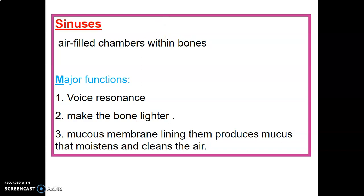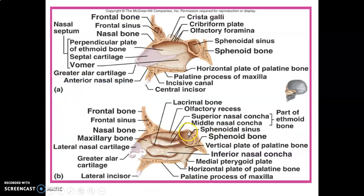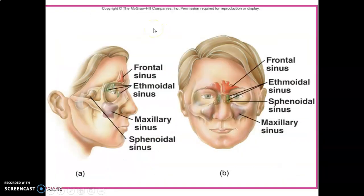The paranasal air sinuses are mucosal-lined, air-filled spaces within the skull bones. There is a frontal sinus in each frontal bone, a maxillary sinus in each maxillary bone, a sphenoid sinus in the sphenoid bone, and ethmoid sinuses in the ethmoid bone. They help make the skull lighter and give the voice some resonance. They are lined by mucous membranes that produce mucus to moisten and clean the air.